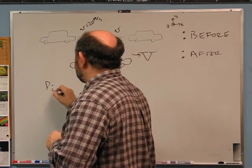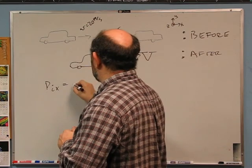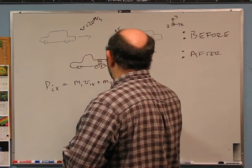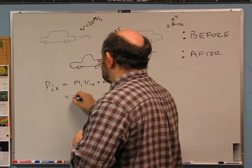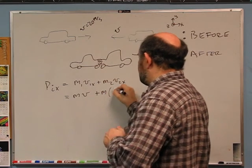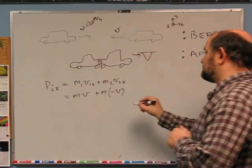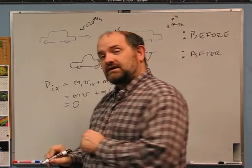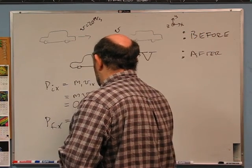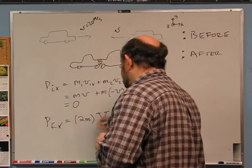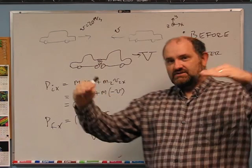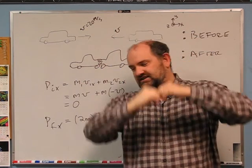The initial momentum in the x direction: letting m be the mass of the car, p_ix = m₁v₁ₓ + m₂v₂ₓ. We know m₁ = m, v₁ₓ = +v (plus x direction), m₂ = m, and v₂ₓ = −v (negative direction). So the initial momentum is zero in x. That means p_fx = 2m × capital V must also equal zero. So the answer is V = 0. These two cars coming at the same speed crash and just stop right in the middle.